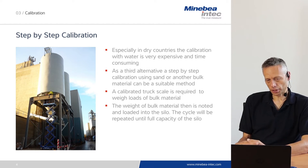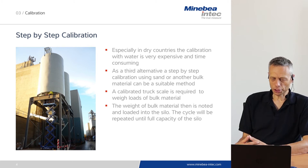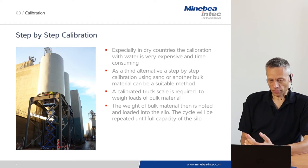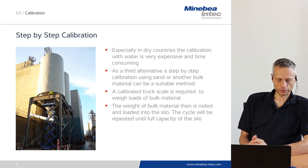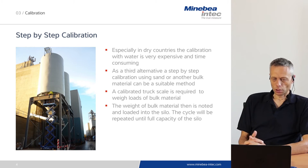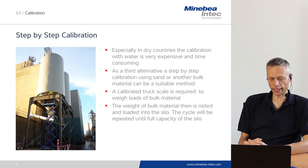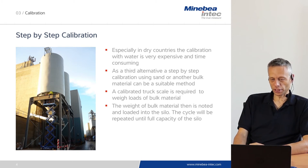Another possibility is the so-called step-by-step calibration. Especially in dry countries, calibration with water is very expensive and time consuming. Step-by-step calibration uses sand or another bulk material — for example, sand or polyethylene granulate filled into silos step by step based on a truck that is loaded and weighed on a truck scale. Large amounts of material can be filled in step by step, and the indicator software allows you to enter the filled-in quantities as a calibration weight. The value is recorded, and then the next amount of material is added so that the weight increases step by step until it reaches full scale. The cycle is repeated until the full capacity of the silo is achieved, though this is also quite time consuming.